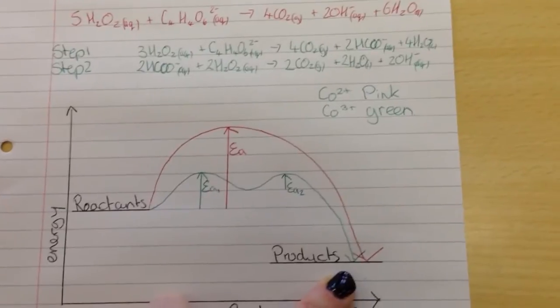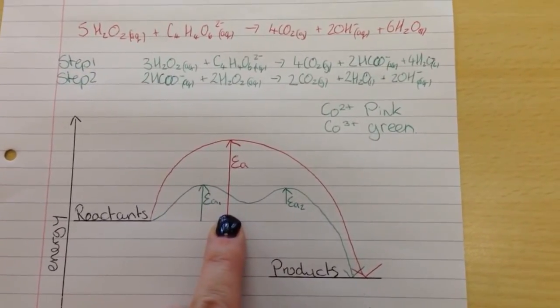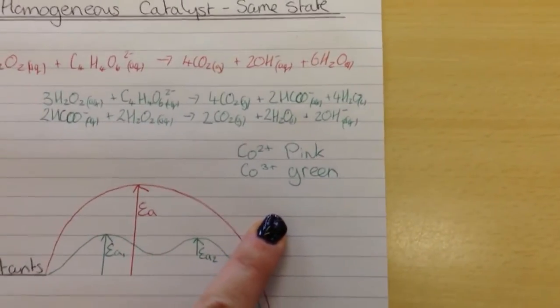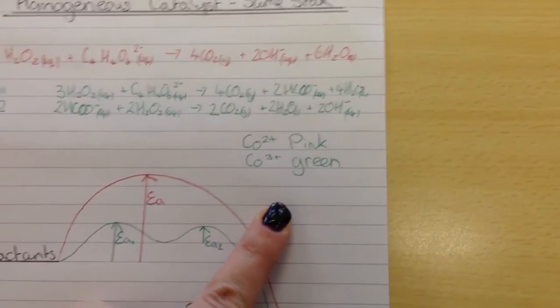So it's like taking a shortcut. They both ended up at exactly the same place, just with the catalyst it was a little bit faster to get there. So the cobalt in its two-plus oxidation state was pink and its three-plus oxidation state was green.